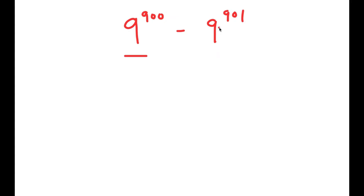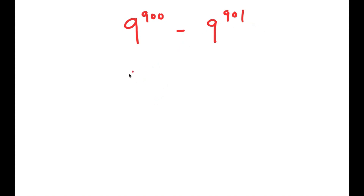The easiest way to solve this is to simplify as much as we can, and a way to do that is to factor out a term. Well, 9^900 is actually a factor of 9^901, so all we have to do is rewrite 9^901 as something times 9^900. We can use properties of exponents to do this.